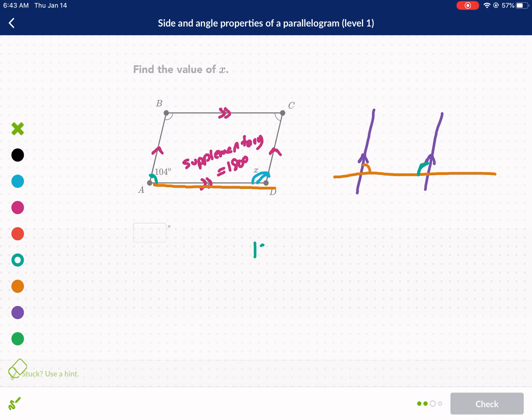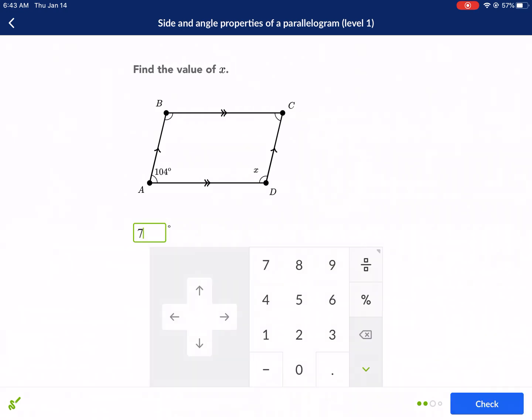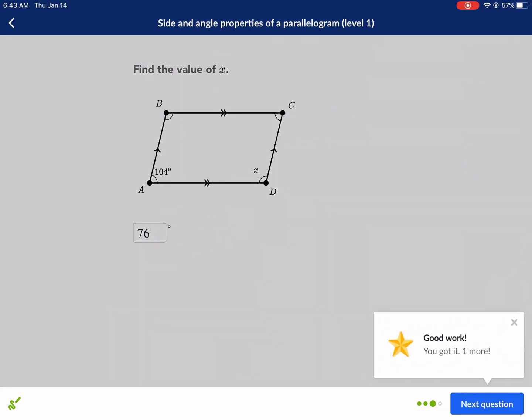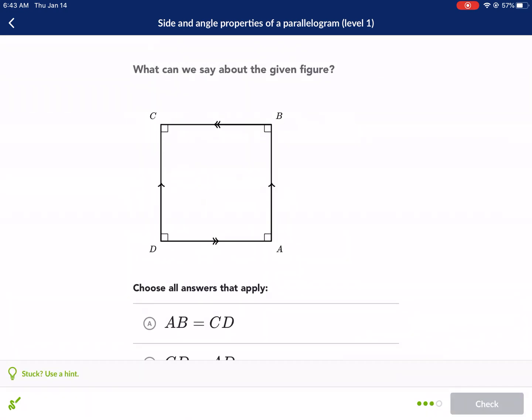So they add up to 180. They're supplementary. So angle 104 plus X has to be equal to 180. So we simply subtract by 104 to both sides, and we're going to get 76. X equals 76. Did we get 76 for the last answer? Leave a comment below if we did, because I can't remember.